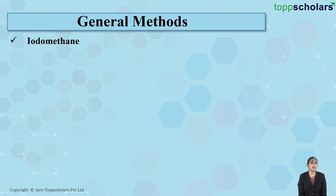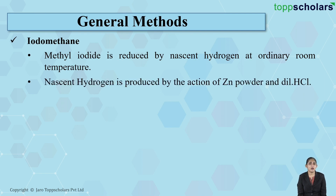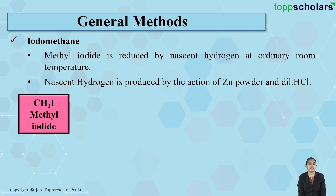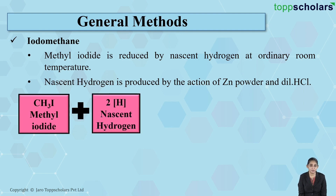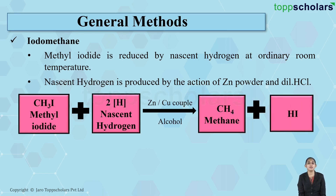The next method is by using iodomethane. Iodomethane is simply methyl iodide. Methyl iodide is reduced by using nascent hydrogen at ordinary room temperature. Nascent hydrogen is produced by reacting zinc powder with dilute hydrochloric acid. When we react methyl iodide with nascent hydrogen, nascent hydrogen reduces methyl iodide into methane along with hydrogen iodide.